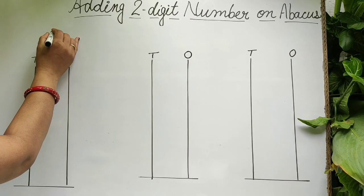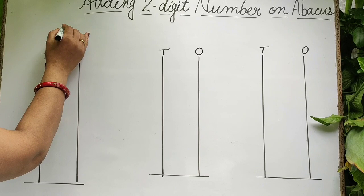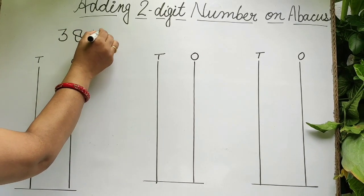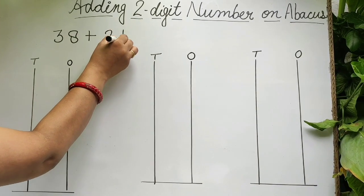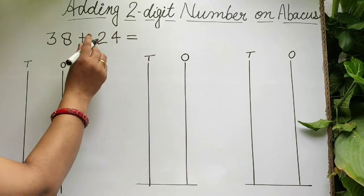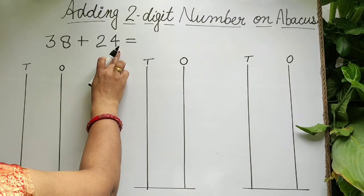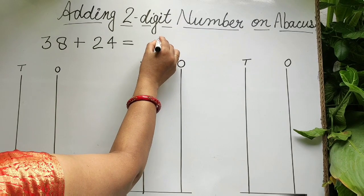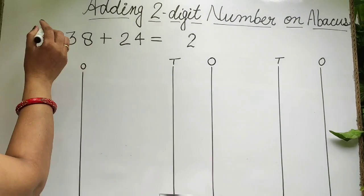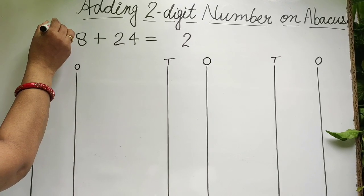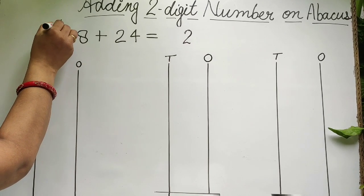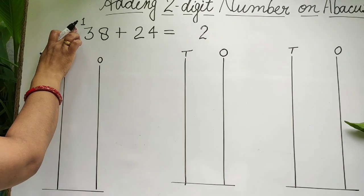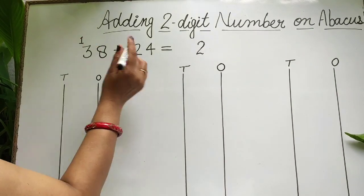Let's solve the next problem: 38 plus 24. Eight plus 4 is equal to 12, and 1 carry over on tens. Two plus 3 plus 1 carry over is equal to 6.